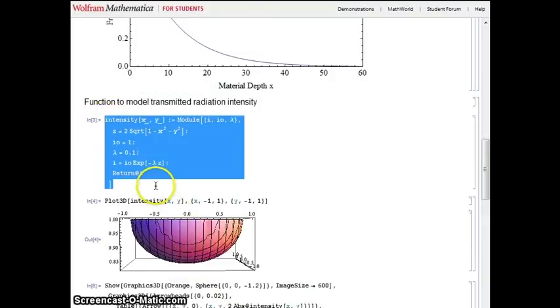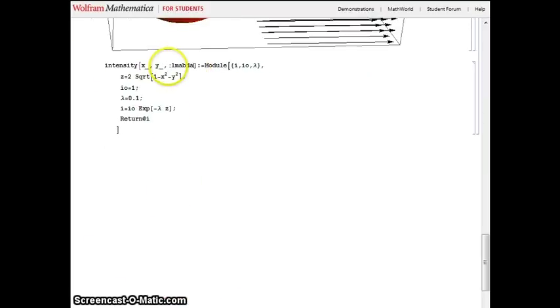Now let's see what happens when we replace lambda, which was a constant, with a function. This means that we are changing the material's density as a function of the sphere's radius. I'm going to alter the intensity function I made before so that we can specify different functions for lambda.